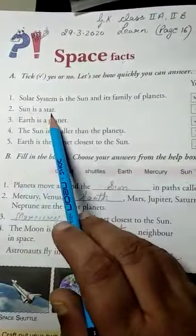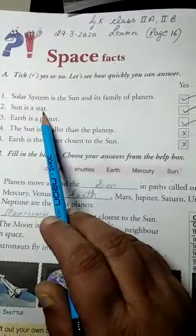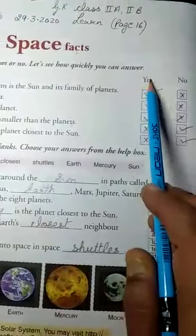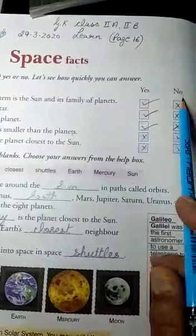Number two: Sun is a star. Yes, sun is a star. So you have to put a tick mark in the yes column and a cross in the no column.